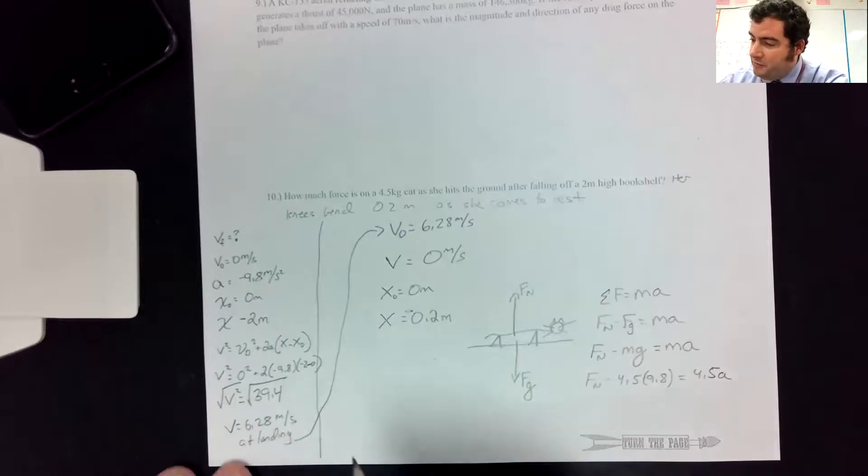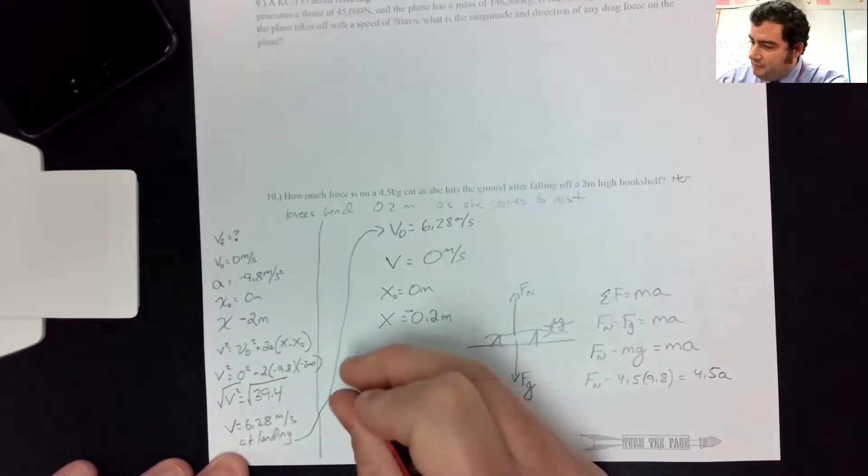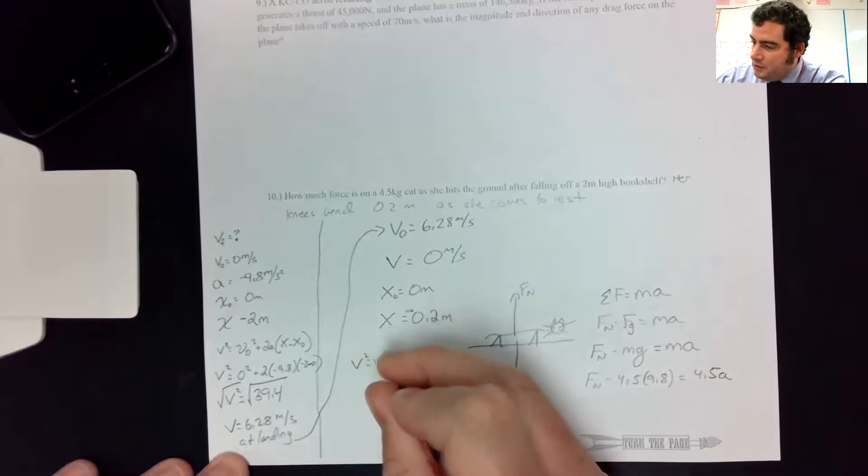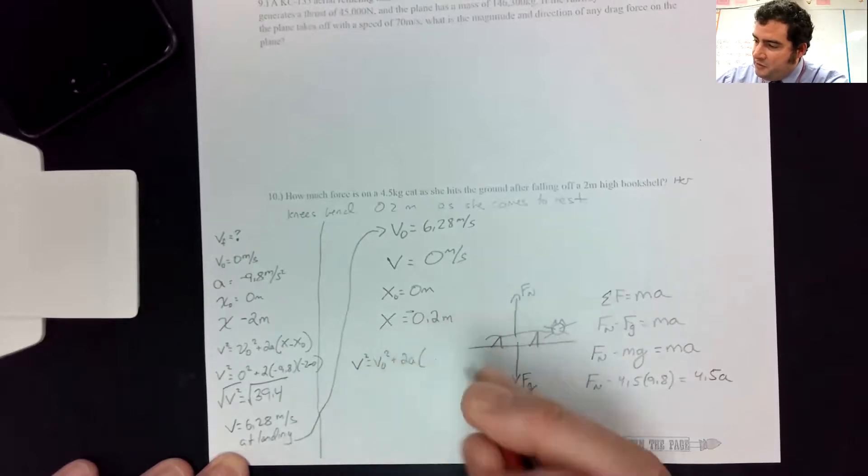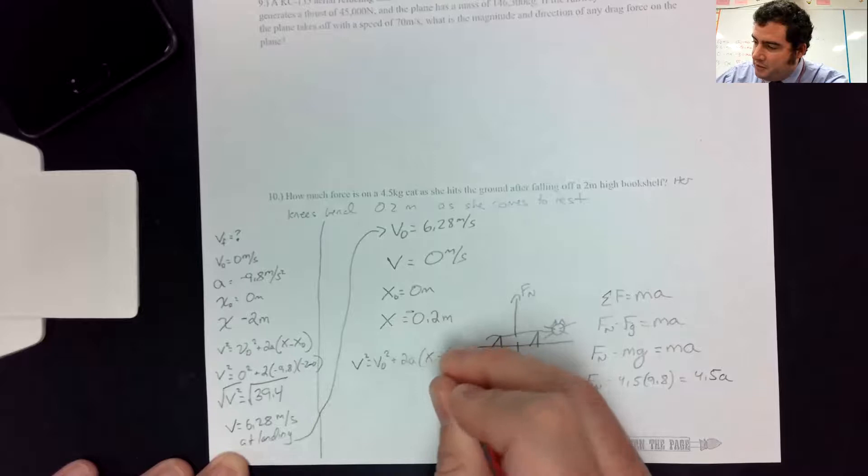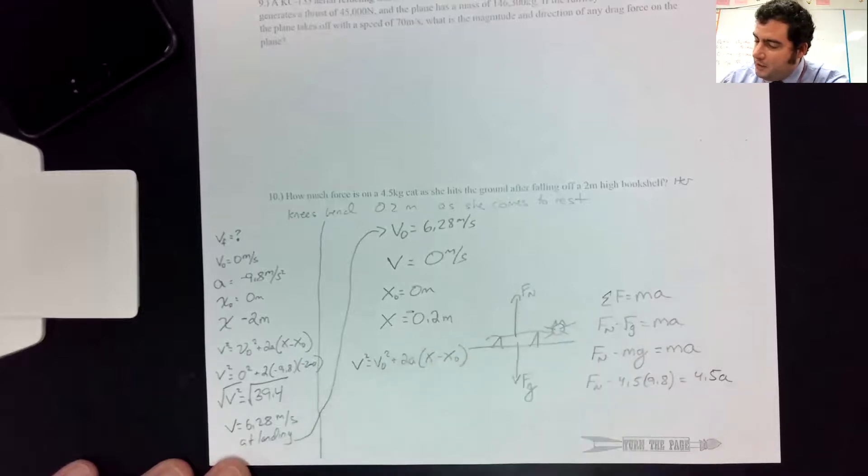So I think the same equation from before. We don't have any information about time. If picking equations is stressing you out, don't let it bother you. Just pick an equation and go with it. And if it's the wrong equation, you'll end up with something unsolvable with two unknowns. So then you just pick another one and try it.